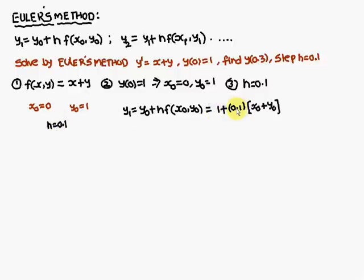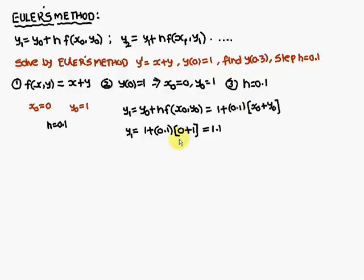I have substituted h as 0.1. And f of x0, y0 means x plus y, therefore x0 plus y0. x0 value is 0 and y0 value is 1. Just substitute: 1 plus 0.1 into (0 plus 1). Therefore, y1 is equal to 1.1.